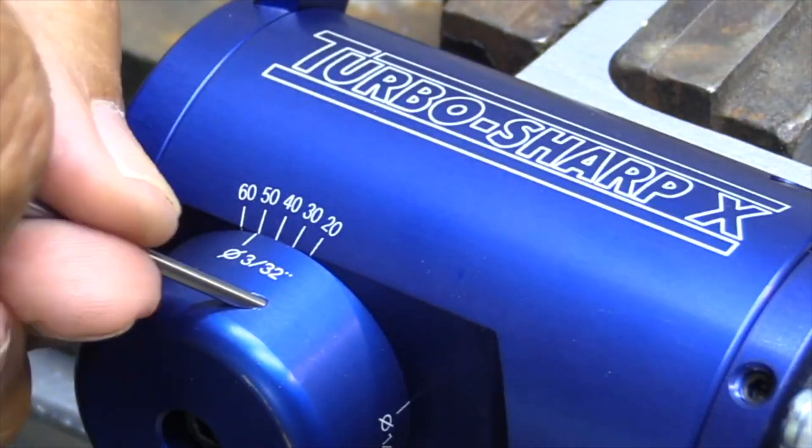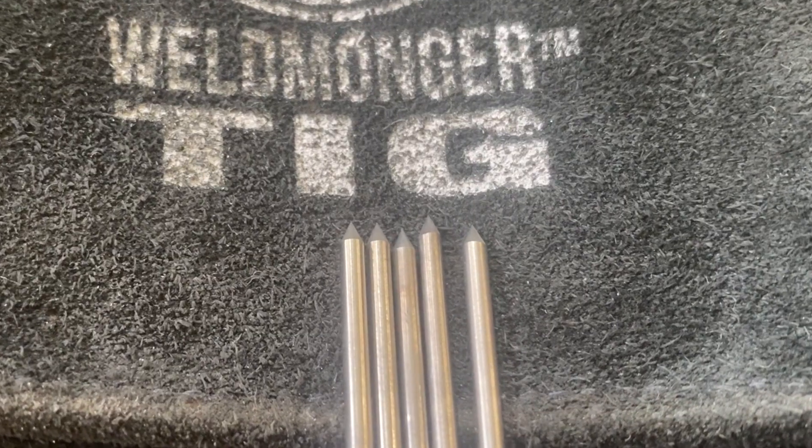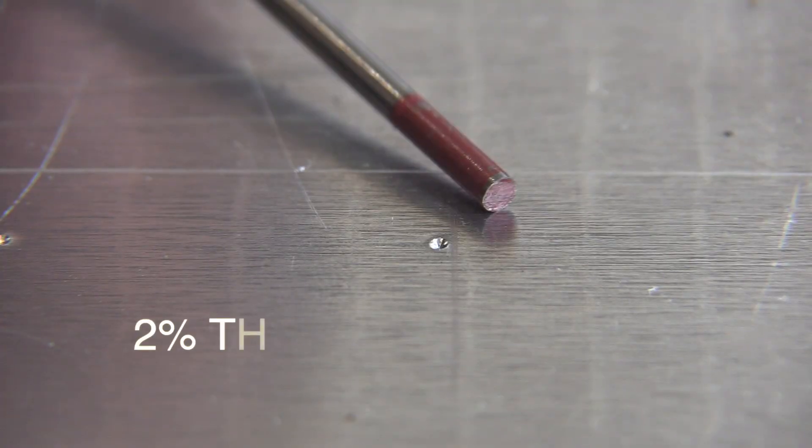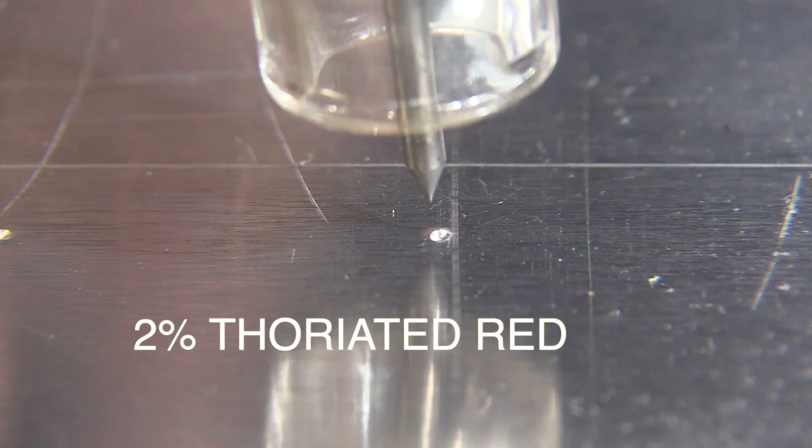I used a tungsten grinder so that all the points would be the same starting out. All these are going to weld similar on DC. What I'm interested in is how they'll do on AC at 200 amps.